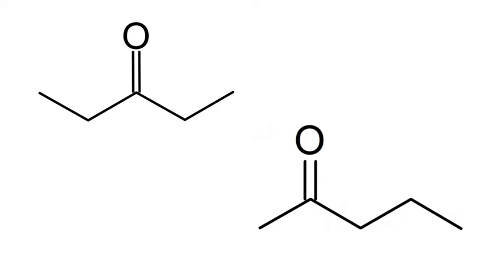For pentan-2-one, we can expect to see a peak for the CH3 on the far left-hand side, a different peak for the next carbon, and a third separate peak for the following one. That's a CH2, and you might think the next carbon along — another CH2 on the same molecule — would give the same peak. Surely they're equivalent? Absolutely not. They're going to give their own peak as well.